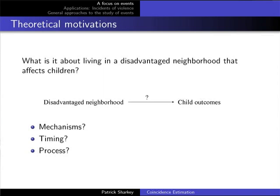Secondly, what is the temporal relationship between exposure to a disadvantaged or advantaged environment and its consequences for child outcomes? Third, what is the process — so even if we know the temporal order, how does exposure to an environment then lead to impaired or improved outcomes? I'm going to focus on particular events occurring in children's environments in an attempt to make some progress on these fronts.